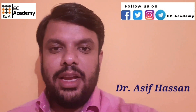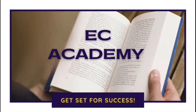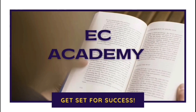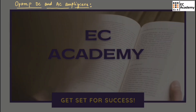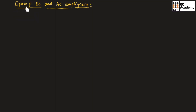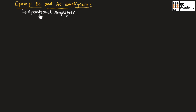Hello friends, welcome to EC Academy. In this lecture, let us understand op-amp DC and AC amplifiers. Op-amp is nothing but operational amplifier. It will perform some mathematical operation and also it will amplify the weak signal. That's why it is known as operational amplifier. Operational amplifier is commonly known as op-amp.